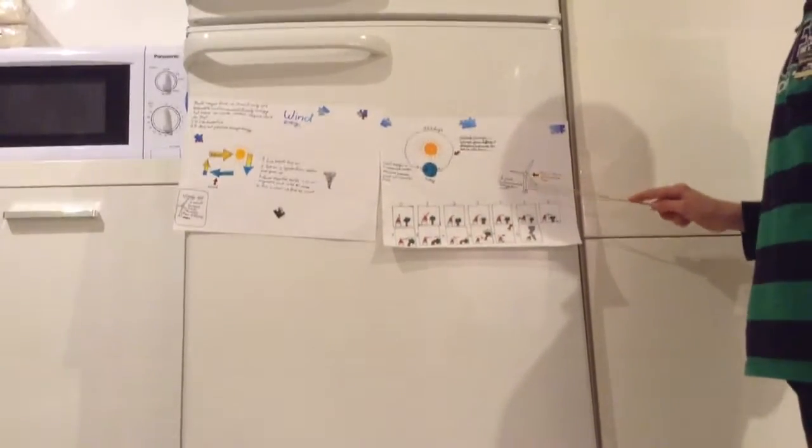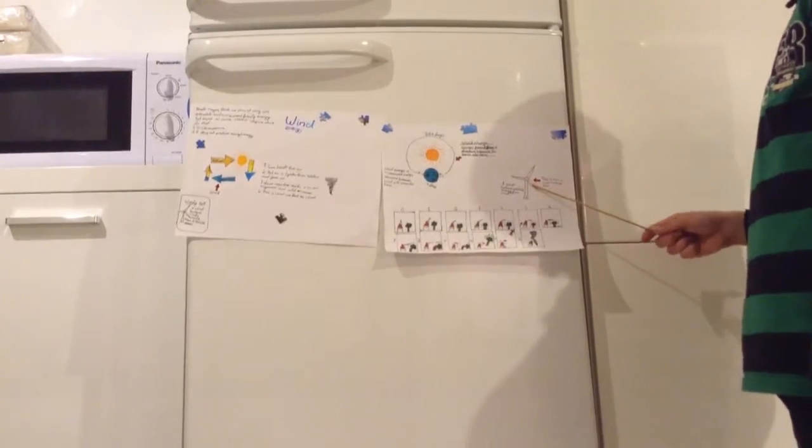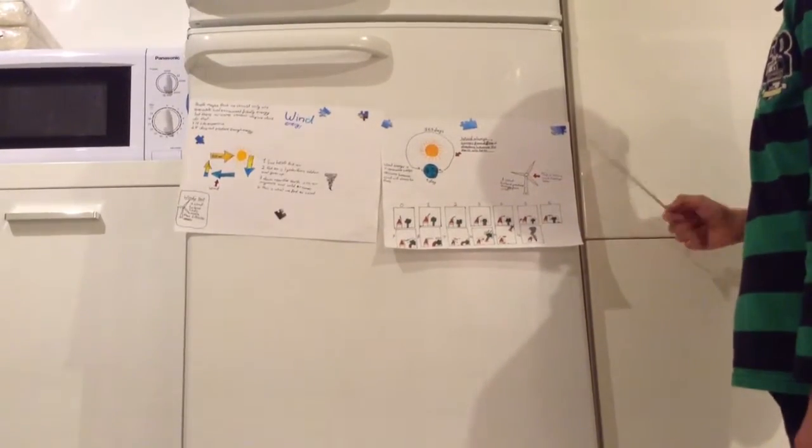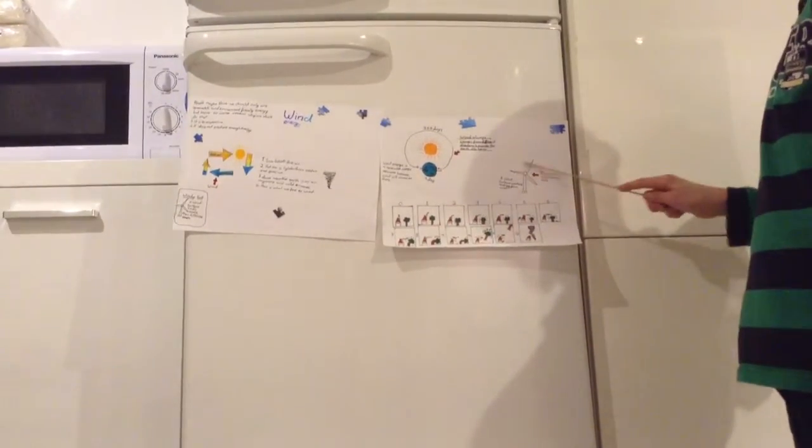Inside, behind the rotor blades, there is a generator, which provides electricity from the wind that turns the rotor blades. Now I want to show you how strong wind can be.